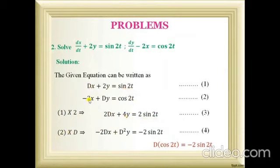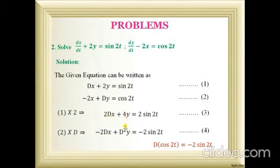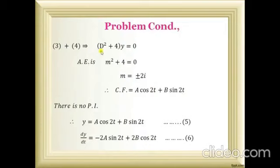Multiplying equation 1 by 2: 2Dx + 4y = 2 sin 2t. Multiplying equation 2 by D: −2Dx + D²y = D(cos 2t) = −2 sin 2t. Adding these two equations, 2Dx and −2Dx cancel. In the y terms, D²y + 4y gives (D² + 4)y. On the right-hand side, 2 sin 2t − 2 sin 2t = 0. So we get (D² + 4)y = 0.